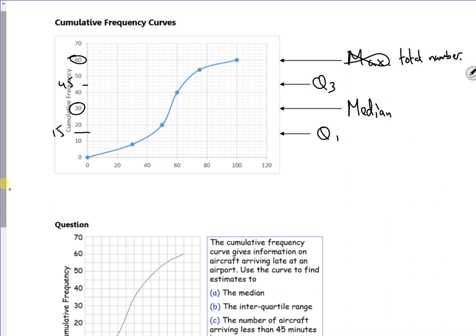I feel like total number isn't good enough. Total number of data items. Observations. I can't even read my writing, sorry. Right, let's have a look at this question then.